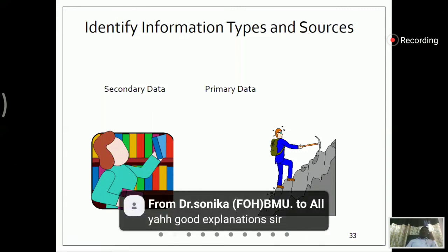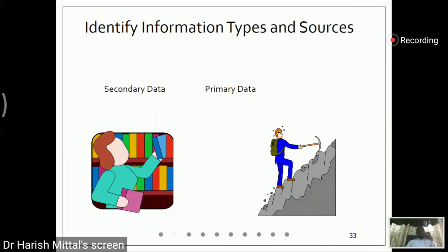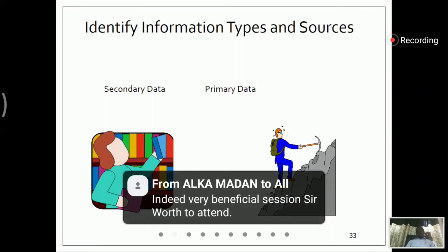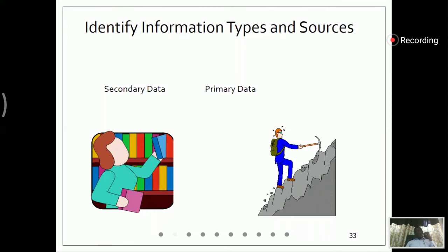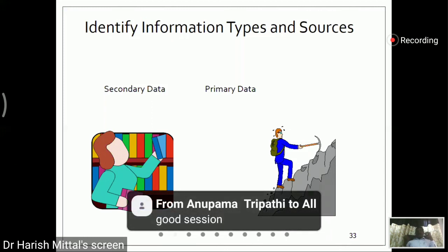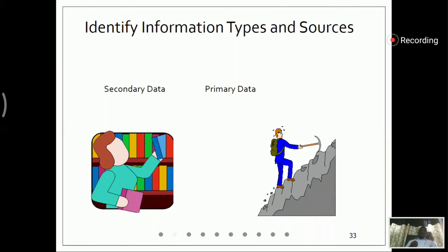Secondary data is what we get from the literature — data which is already established and already done. Primary data is what we have to collect ourselves. We can set up some research, conduct a survey, or do live projects with data. So primary data is live data, and secondary data is already established data. We can train our system on secondary data, and results are already available from secondary data so we can validate our results against previous models.